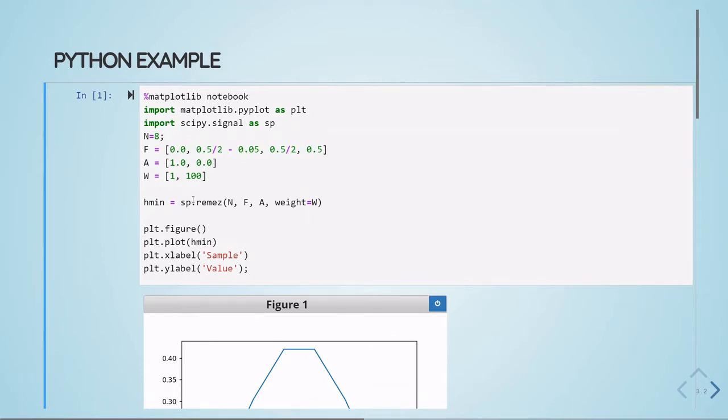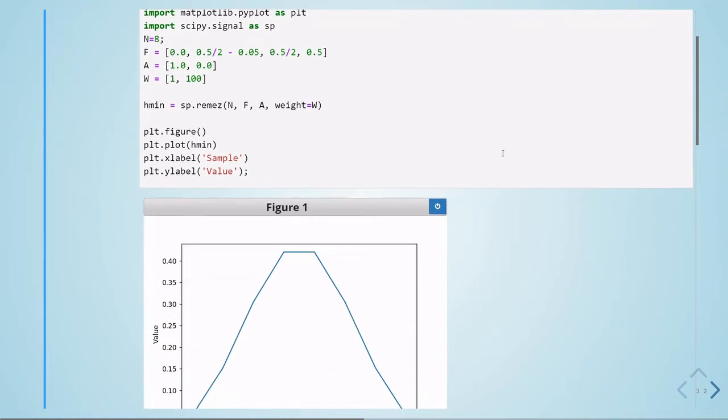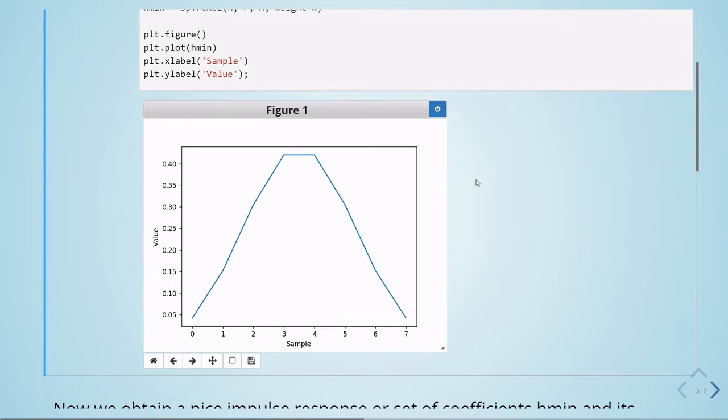Here we are having the impulse response by calling the remez function with these parameters, and here we are plotting the impulse response of the filter. So we have 8 samples of the impulse response, and this is the value.